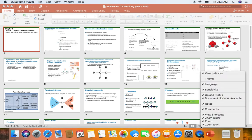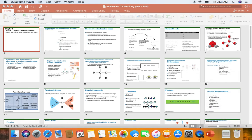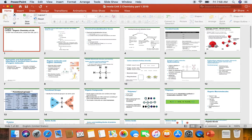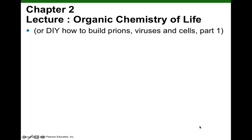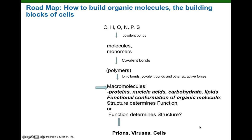This unit has 15 slide parts, so we'll be talking about part one, part two, part three, etc. We could give a subtitle to this unit of 'do-it-yourself: how to build prions, viruses, and cells.' So this is kind of our roadmap.